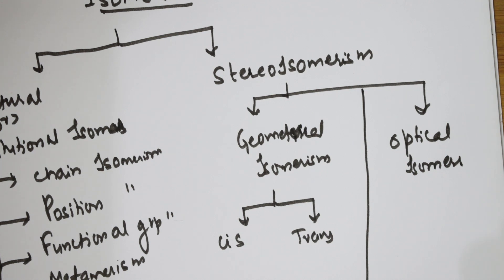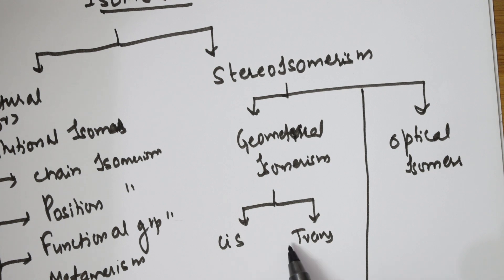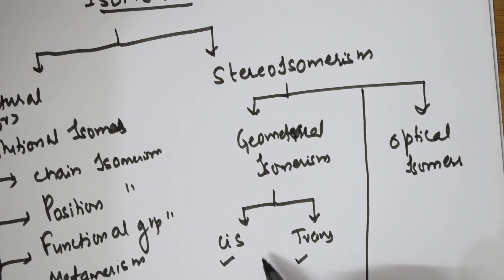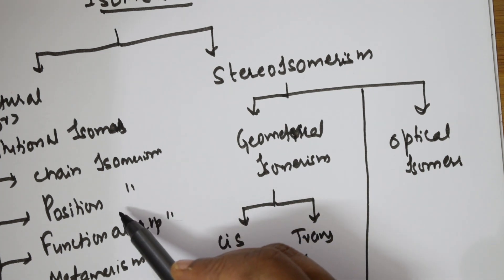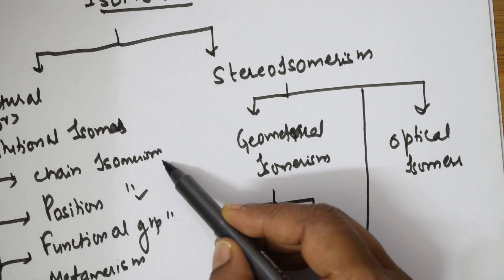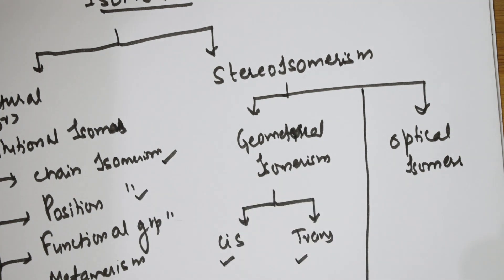For naming and nomenclature of alkenes, I will be using cis and trans isomerism. I will also be explaining position isomerism. As of now, I am going to take cis and trans isomerism, and I will take the example of position isomerism and chain isomerism for explaining alkenes.